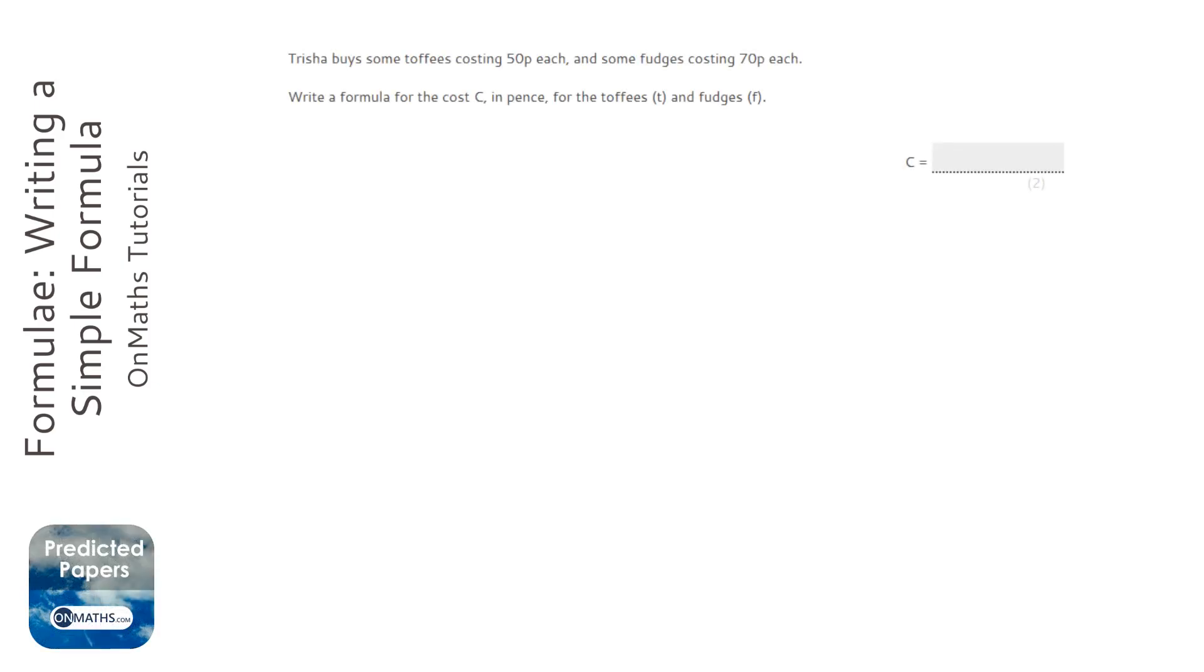For this question we're asked to find the cost of the toffees and the fudges. Now if we imagine that we had two toffees and three fudges, how would you work this out? Well, the cost would be two times 50p and then we would add three times 70p.